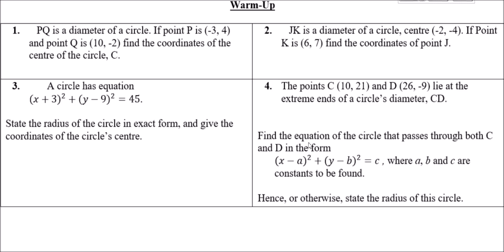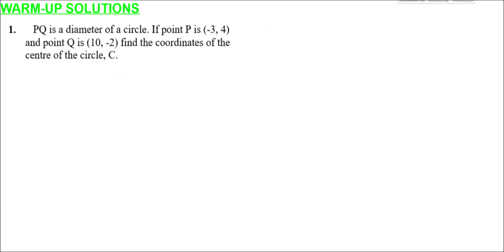Once you've had a go at those, let's look together at the solution to question one. We're told that PQ is a diameter of this circle, with point P at (-3, 4) and Q at (10, -2). We need to find the coordinates of the center of the circle C. If PQ is the diameter, we can find the center of the circle by working out the midpoint of PQ.